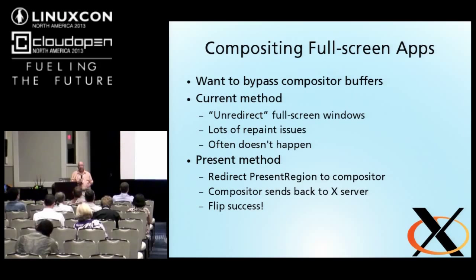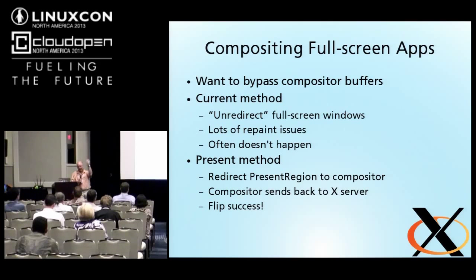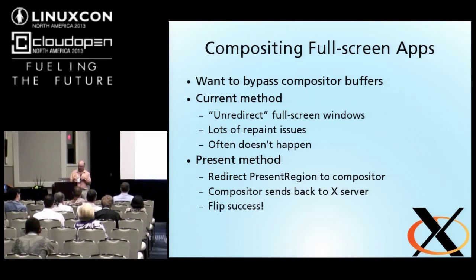For full-screen applications, a smart compositing manager currently recognizes when an application covers the whole screen and turns off compositing to let the application talk directly to the screen. In X, this is a huge pain because you have to unredirect the full-screen window, which almost always causes flicker. With the Present extension optimizations, there will be no need to do that composite extension dance. The compositing manager will just get the pixmap redirected to it and send it right on to the X server, and the full-screen swap — including the efficient flip that just changes the pointer — will happen with no copies.